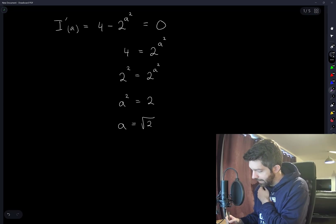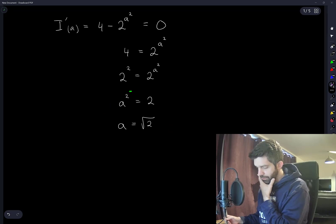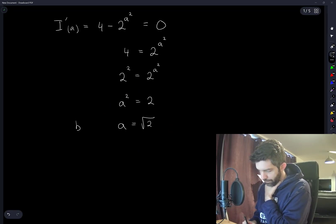The question tells us that a is a positive number, and so we don't have to worry about the negative root to this equation. And this is one of the options given. This is option b.